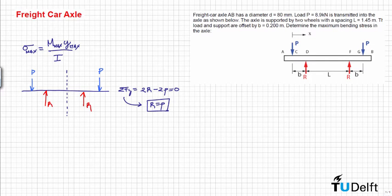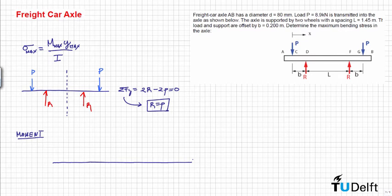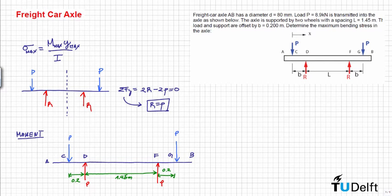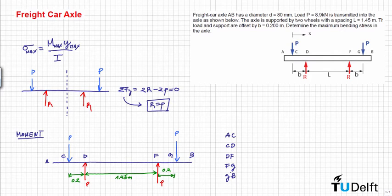Now we are able to calculate the expressions for the moment. We divide our structure into different segments: AC, CD, DF, FG, and GB. For section AC, as you can see, there is no moment, so M is equal to 0.